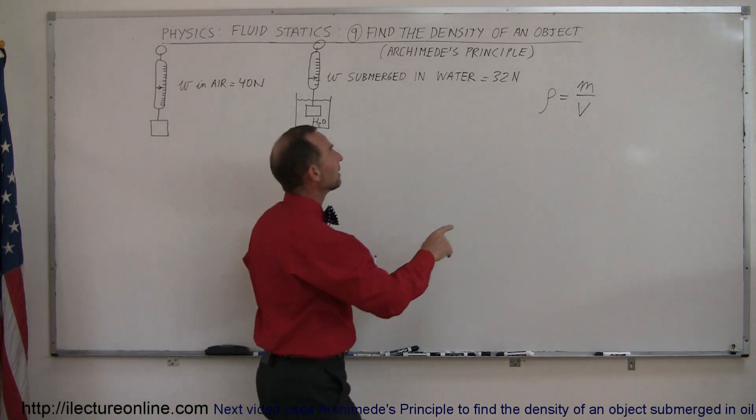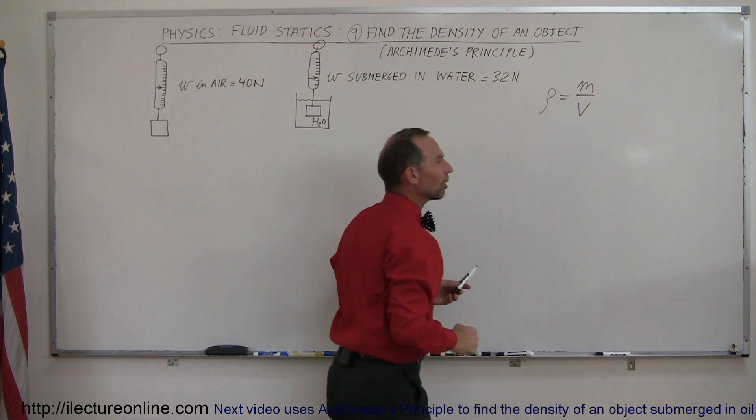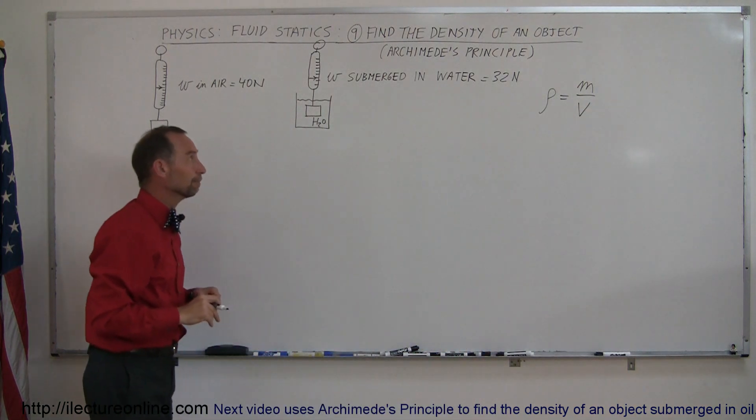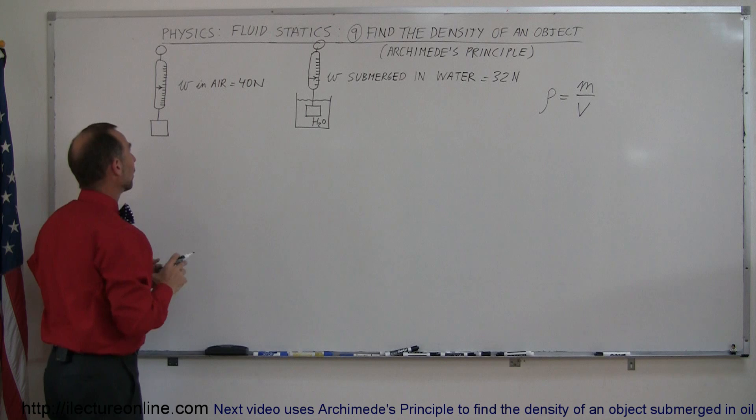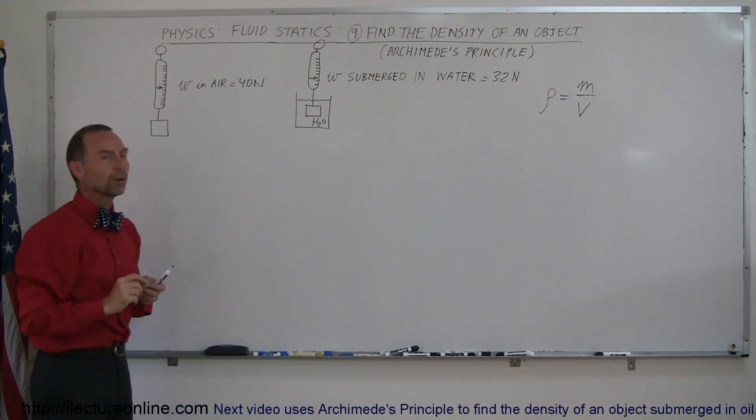So again, to find the density of an object, we need to know its mass, and then we divide it by its volume. But how do we find the volume? Well, a little trick here. Why does it weigh 40 Newtons in the air and 32 Newtons when it's submerged in water?